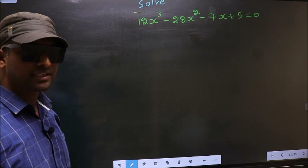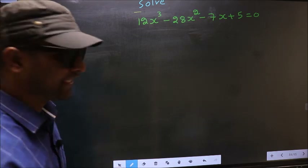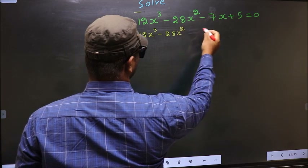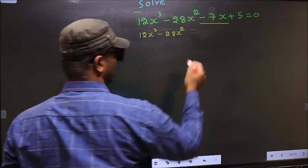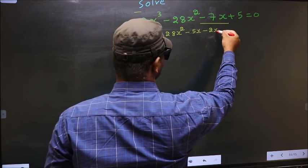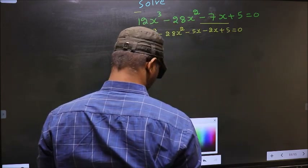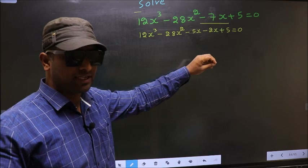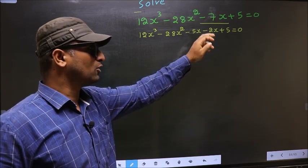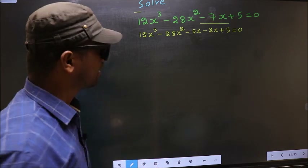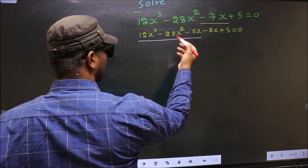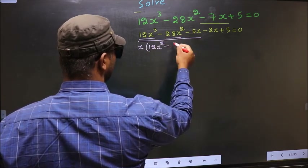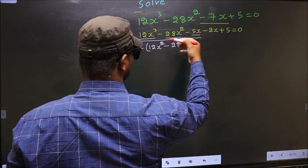For that, we have to change the x term. In place of -7x, I now write -5x - 2x, giving: 12x³ - 28x² - 5x - 2x + 5 = 0. From the first three terms, what can be taken out as common is x. So you get x(12x² - 28x - 5).